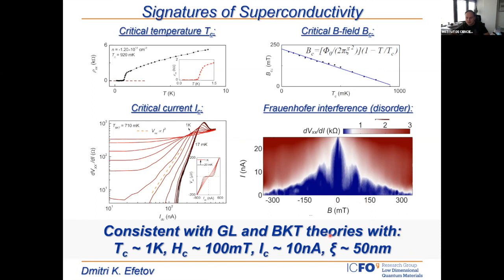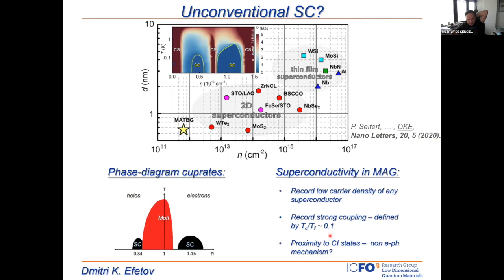From these magnetic field measurements we can extract the coherence length of the superconductor, which is usually on the order of 50 nanometers — several lattice constants of the moiré. This superconducting state created the most excitement.